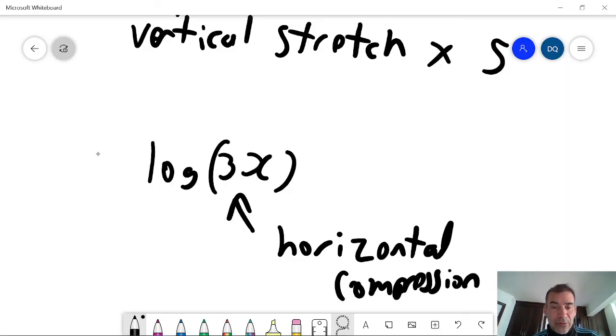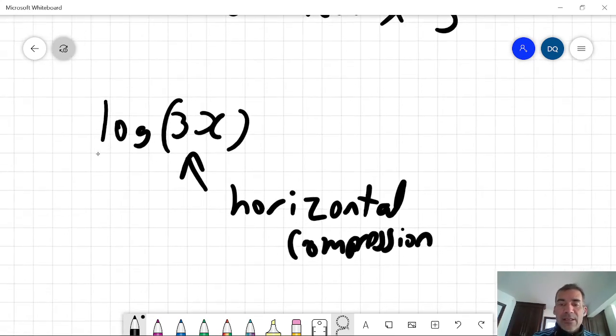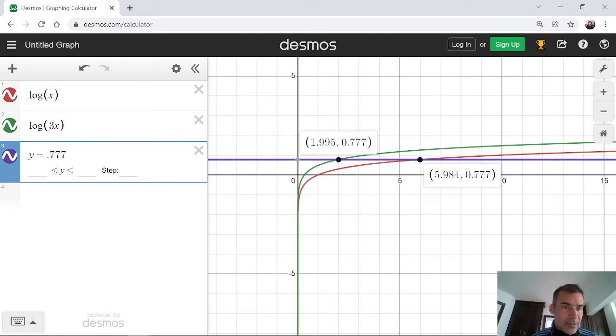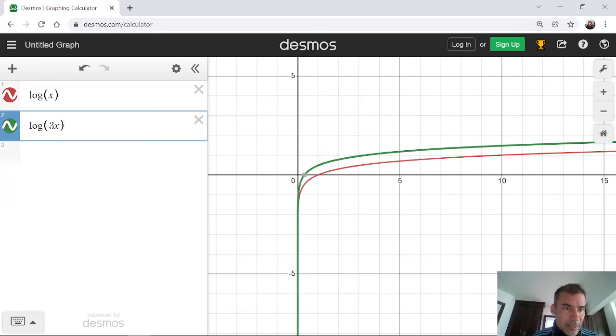So the log of 3x is a horizontal compression, and its width is 1 third. If I want a horizontal stretch, I'll use a fraction. So if I make this instead of 3, if I make this 1 third...